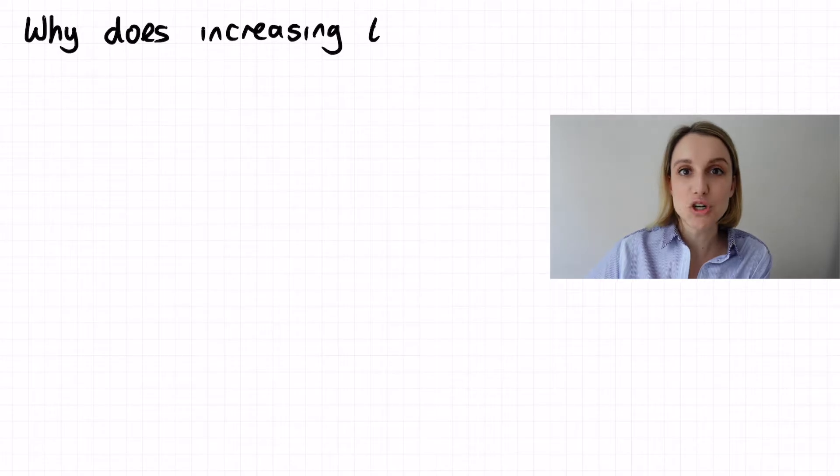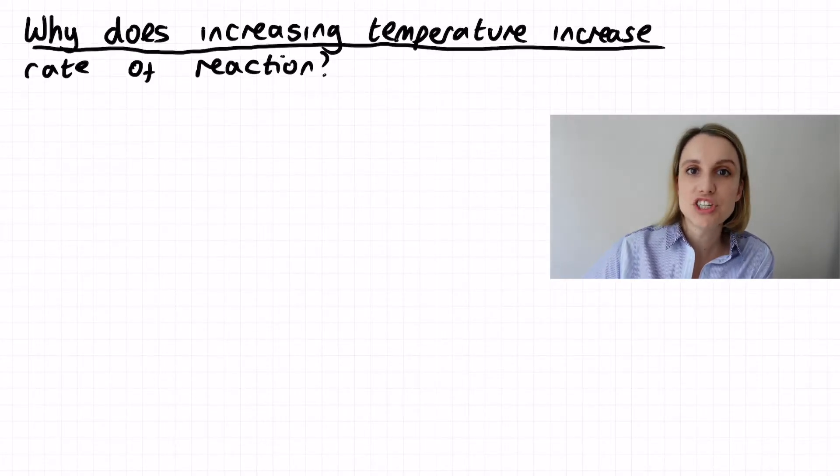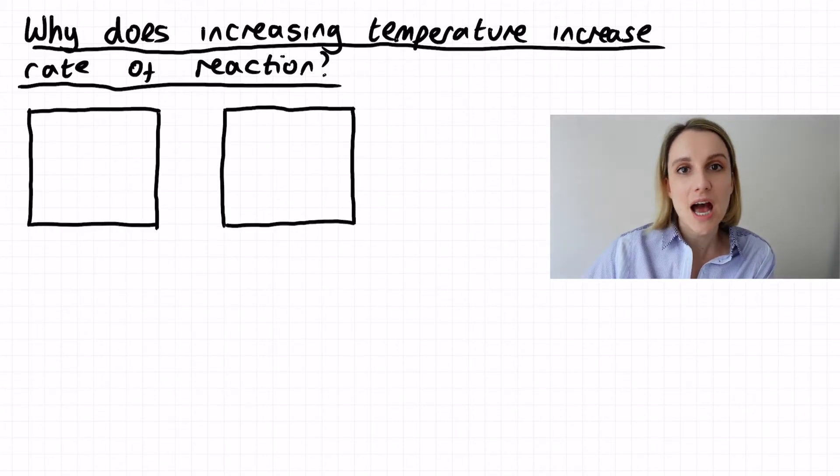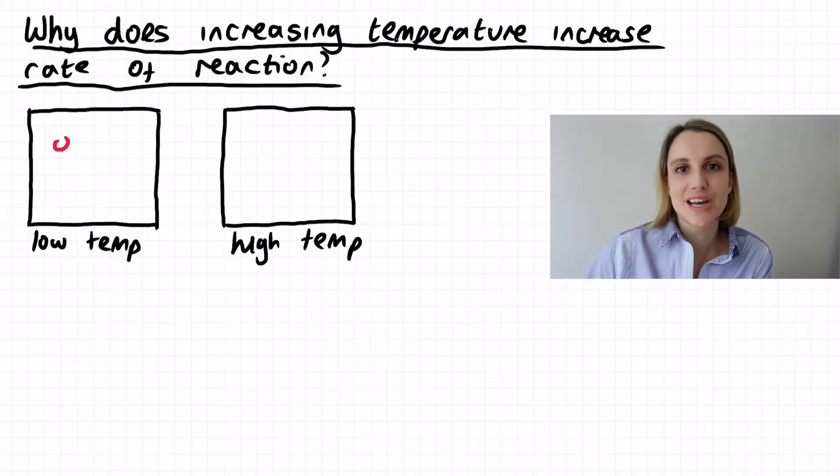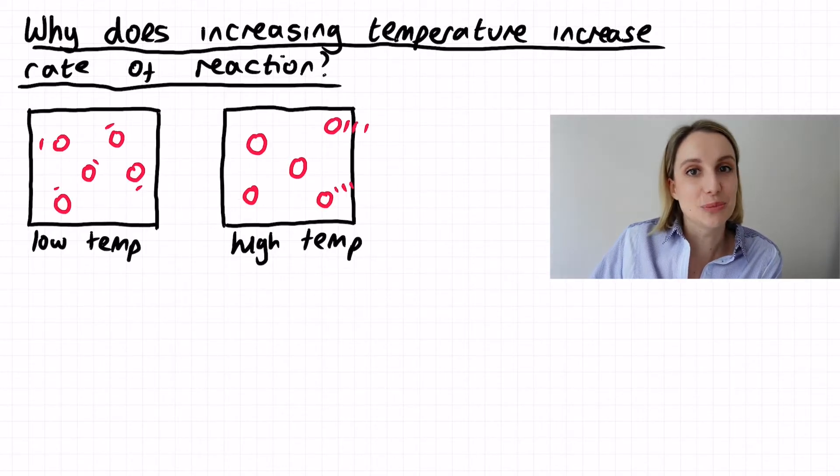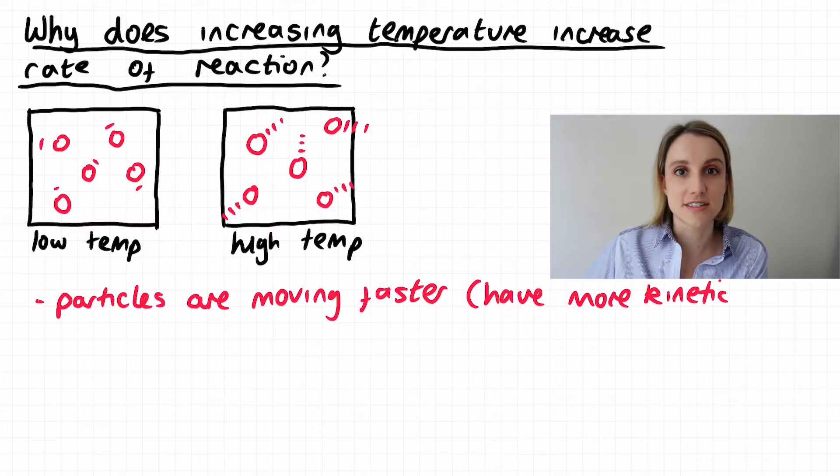Let's start by drawing a model of what's going on with those particles. So you can see in my low temperature version I'm drawing the same number of particles as I will in my high temperature one, but I'm going to show them moving at a slower speed just by these lines behind each individual particle. So at higher temperatures particles have higher kinetic energy, they're moving faster.